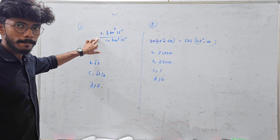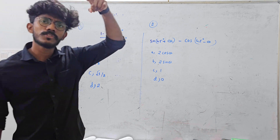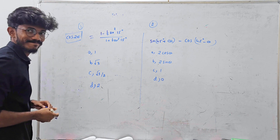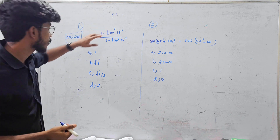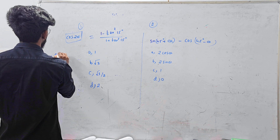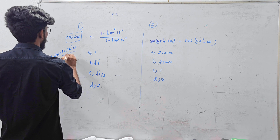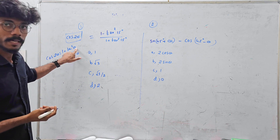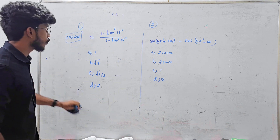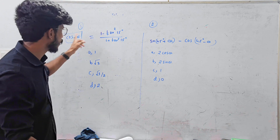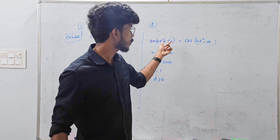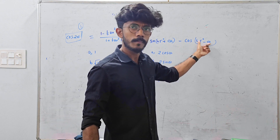Okay, this concept is that 1 minus tan squared x divided by 1 plus tan squared x equals cos 2x. This is the expansion of cos 2 theta. So cos 2x equals 1 minus tan squared x divided by 1 plus tan squared x. Here theta is 15 degrees, so we apply the cos 2 theta expansion: cos 2 times 15 equals cos 30. You will get the final answer using this formula.